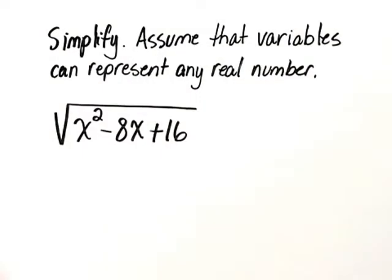Simplify. Assume that variables can represent any real number. The square root of the quantity x squared minus 8x plus 16.